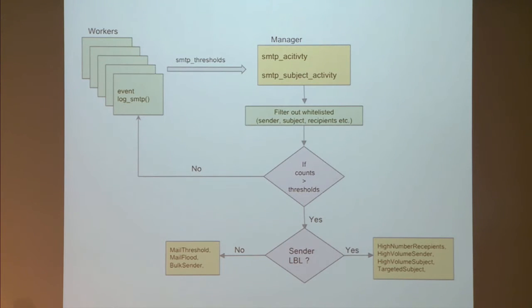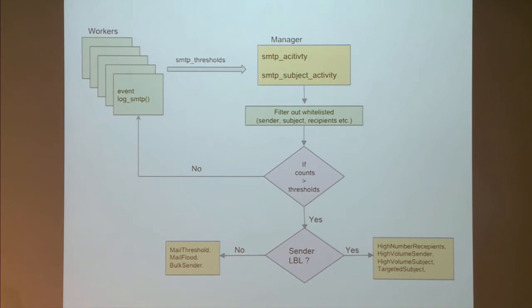The policy works by having all workers see SMTP data and send threshold counts to the manager. The manager has two data structures: one for SMTP activity tracking start time, end time, sets of from and to addresses; and another tracking how many emails share the same subject — because attackers often keep the subject constant while changing Gmail addresses, attachments, or links. The policy scaled in operational testing without crashing Bro, even with millions of emails per day.